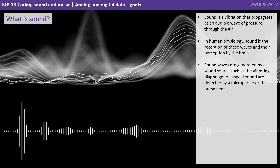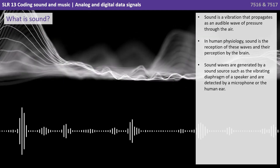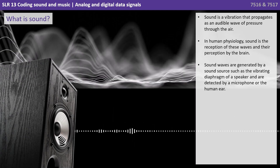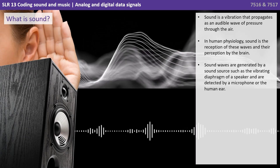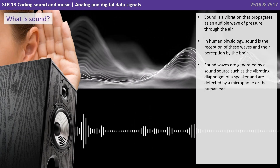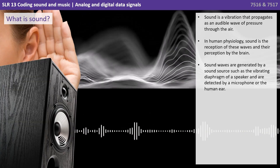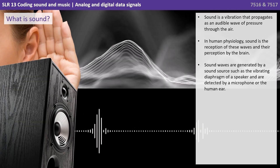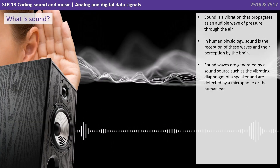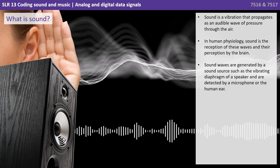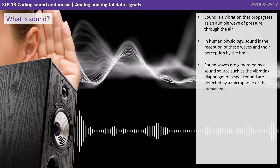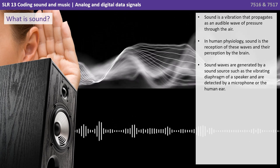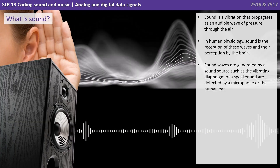So firstly, what exactly do we mean when we refer to sound? Well, sound is a vibration that propagates as an audible wave of pressure through the air. In human physiology, sound is the reception of these waves and then their perception by the brain.